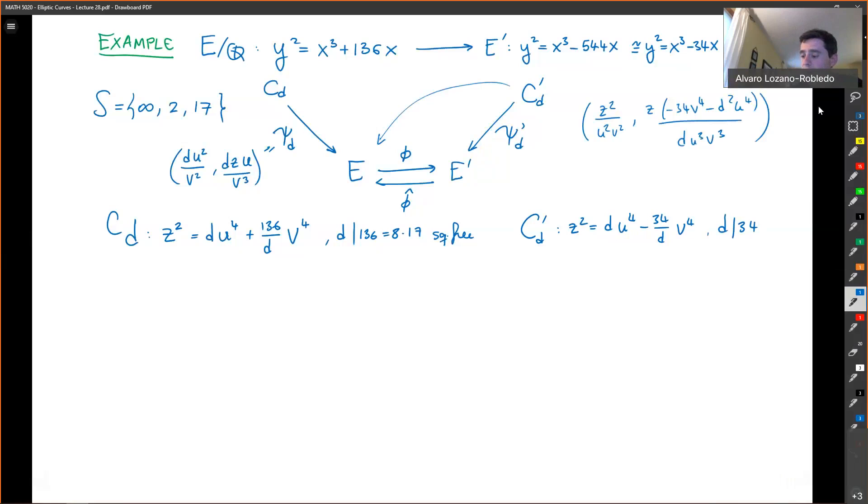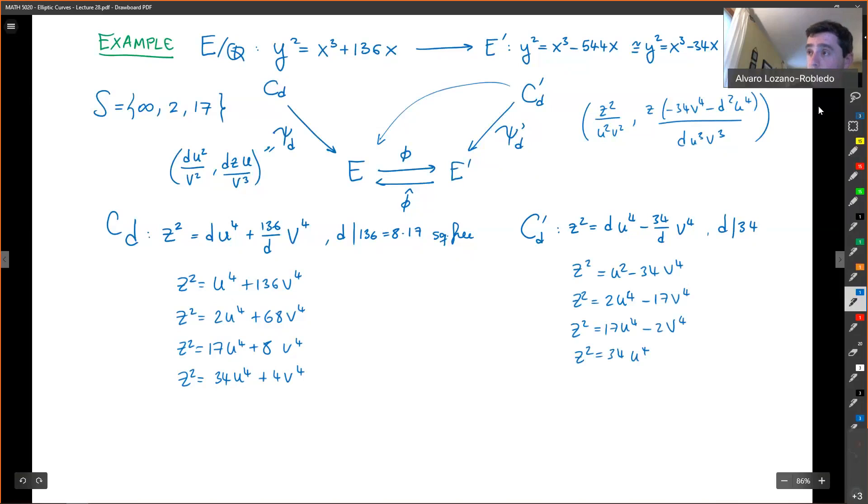And now, for each d that is square free dividing 8 times 17, I get a space. So for d equals 1, u to the fourth plus 136 v to the fourth; for d equals 2, z squared equals 2 u to the fourth; I get 17 u to the fourth plus 8 v to the fourth; and z squared equals 34 u to the fourth plus 4 v to the fourth. And on the other side, I get spaces again: z squared equals u squared minus 34 v to the fourth, z squared equals 2 u to the fourth minus 17 v to the fourth, z squared equals 17 u to the fourth minus 2 v to the fourth, and z squared equals 34 u to the fourth minus v to the fourth.